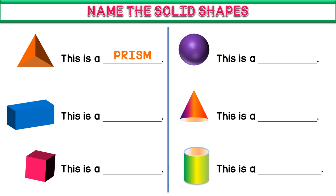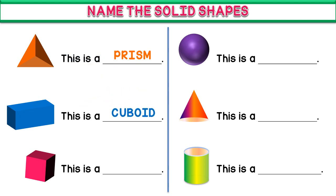You can say this is a prism. The second one is — this is a cuboid. The third one is...